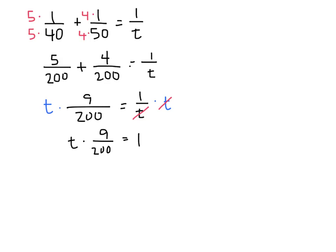We want to get rid of the 9 over 200, so let's multiply both sides by 200 over 9. On the left-hand side, the 200 and the 200 divide out, and the 9 and the 9 divide out. So we end up with t equals 200 divided by 9.